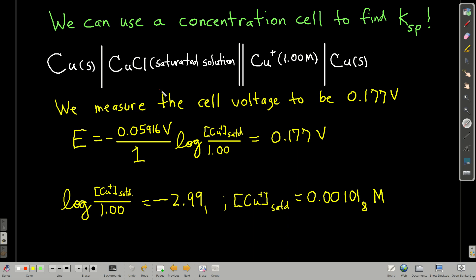Now here, the number of electrons transferred is just one. Log of the concentration of copper in the saturated solution, because that's going to be the more dilute over one molar, which is here at the cathode.